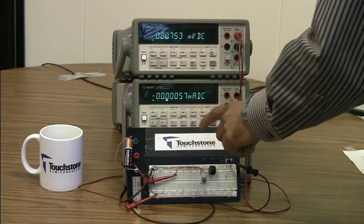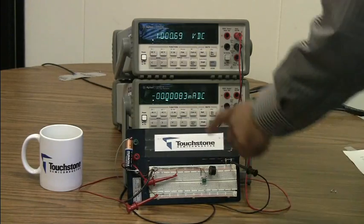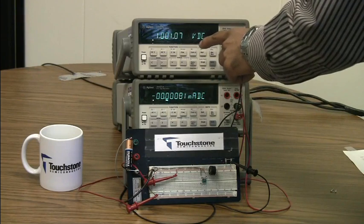However, if I connect the sensor, you will see a 200 nanoamp rise, as shown by the current meter, and a 1-volt voltage is produced at the output of the TS-1001.